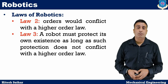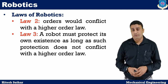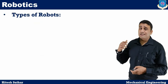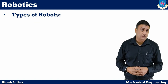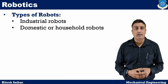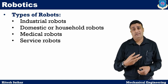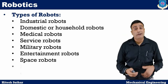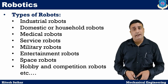All these laws were given by Isaac Asimov in the 1940s. Now let's discuss different types of robots and where they are used. There are industrial robots, domestic and household robots, medical robots, service robots, military robots, entertainment robots, space robots, hobby and competition robots, etc. These are all the types of robots.